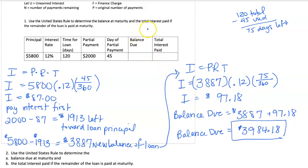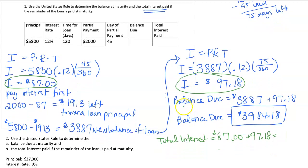And so our balance due is $3,984.18. The second part of the question asks for the total interest paid. So going back, let's take a look at and I'm going to circle any interest that was paid. This interest was paid and then over here we had this interest that needs to be paid. So our total interest is going to be to take the $87 from the first interest plus the second interest, $97.18. And I get a total interest of $184.18.